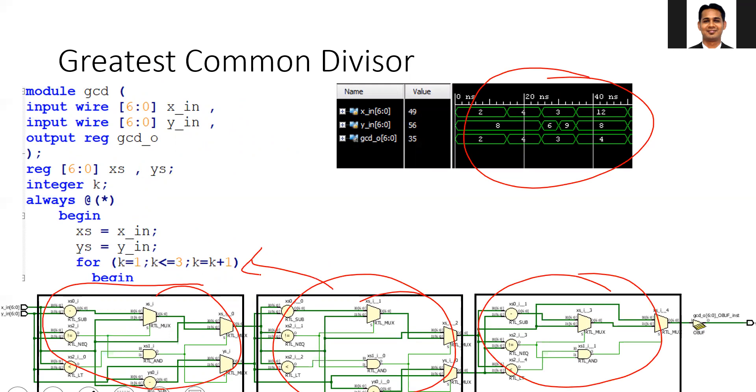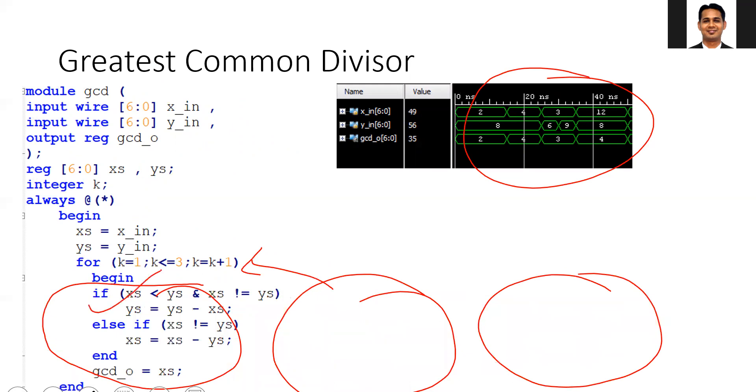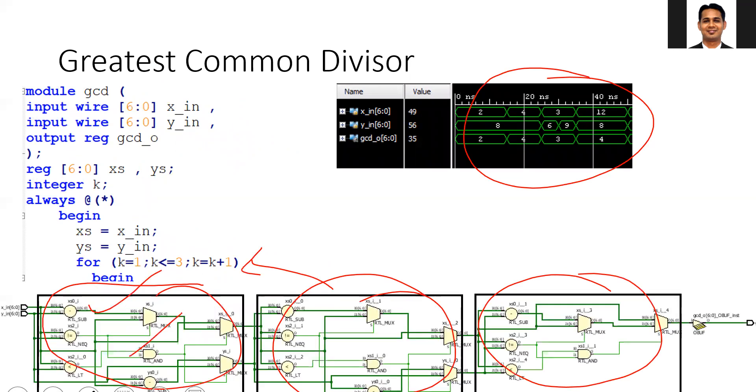In every block, you are comparing the numbers and doing the subtraction. Since there are three iterations, you have three copies of the hardware. You are able to generate the bitstream and everything is working, which is good news.